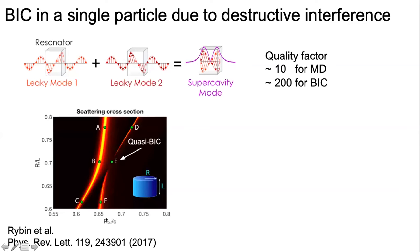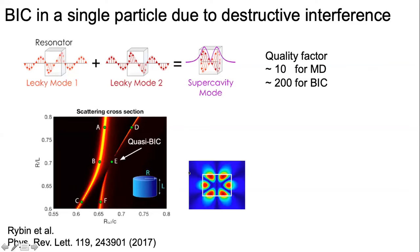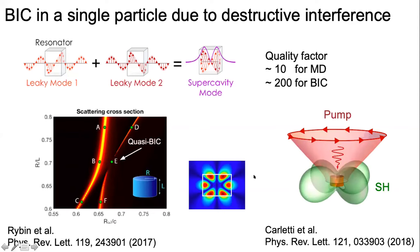To realize this regime, you need to be able to change parameters in phase space. The localization or distribution of electric fields inside the particle is azimuthal in the quasi-BIC mode. It was theoretically shown that an azimuthally polarized pump can be efficiently coupled to a particle supporting a quasi-BIC mode and can be used for efficient second harmonic generation.